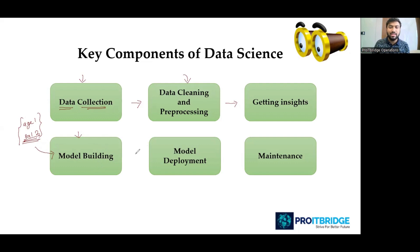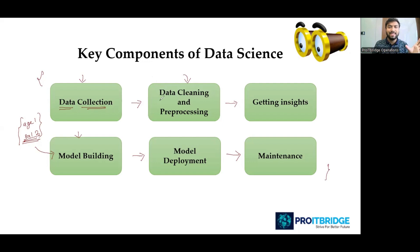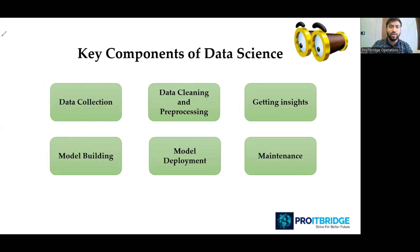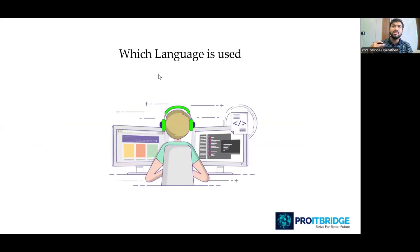After building the model, we can't just keep it to ourselves — we need to deploy it so users can access it. This is model deployment. After deploying, we also need to maintain and update the model, which is model maintenance. So the key components are: collecting data, cleaning data, getting insights, building a model, deploying the model, and maintaining it.